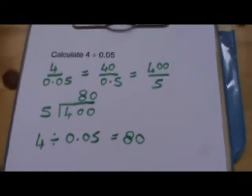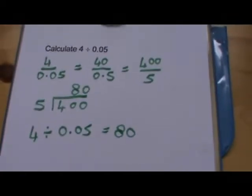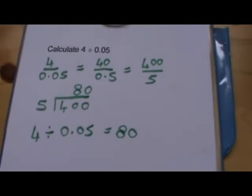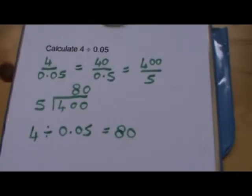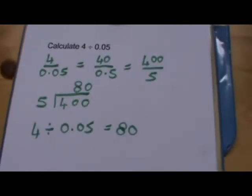Notice that when you divide by a very small number, less than 1, the answer is now getting bigger, isn't it? Because we're finding how many small fractions fit into a whole number. So it's going to go in lots of times. So that's why 80 is a sensible answer in this case.